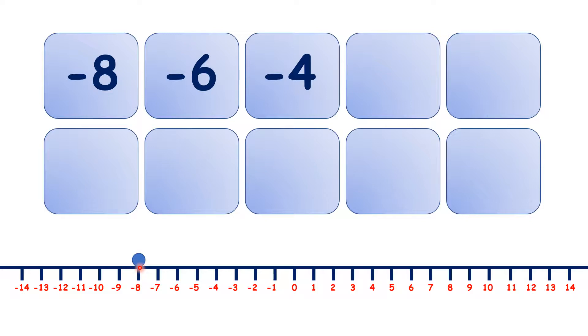If we count on our number line, we can see that we're counting forwards in steps of 2. So using the number line to help you, pause the video and see if you can write the next 7 numbers in this sequence.